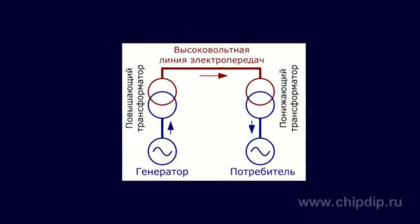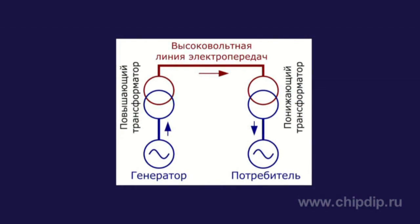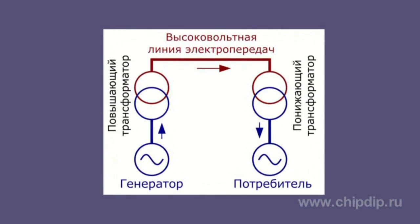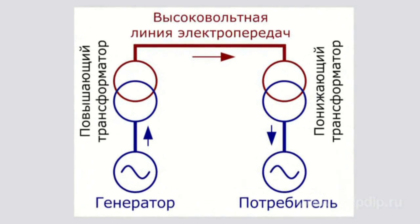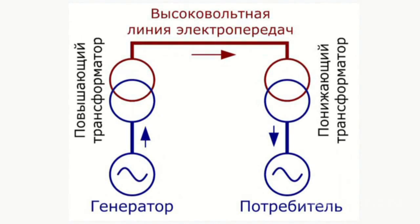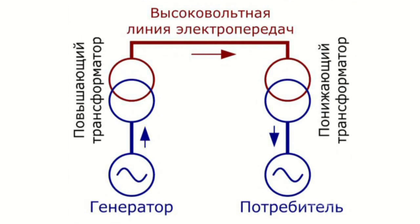Generators at power plants produce alternating current at low voltage. Therefore, for delivery over long distances, with the help of transformers the output generator voltage is increased, and the electricity is transmitted at high voltage through the transmission lines. But consuming power at high voltage is problematic for end users. Therefore, at the end points the voltage is reduced to a level acceptable to specific users and then distributed.